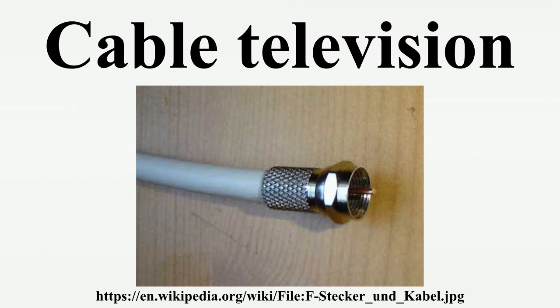All cable companies in the United States have switched to, or are in the course of switching to, digital cable television since it was first introduced in the late 1990s. Most cable companies require a set-top box to view their cable channels, even on newer televisions with digital cable QAM tuners. Because most digital cable channels are now encrypted or scrambled to reduce cable service theft, a cable from the jack-in-the-wall is attached to the input of the box, and an output cable from the box is attached to the television.